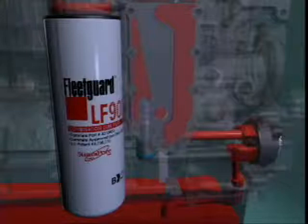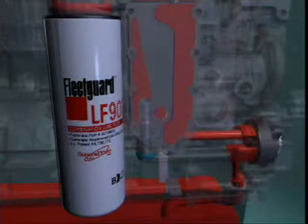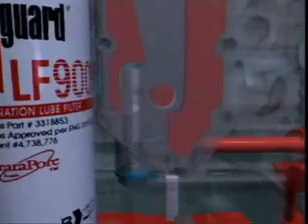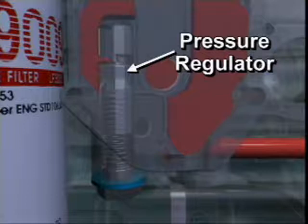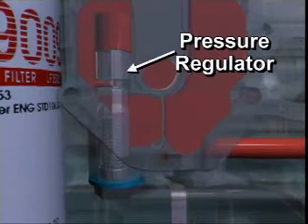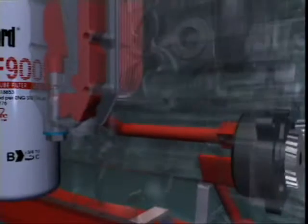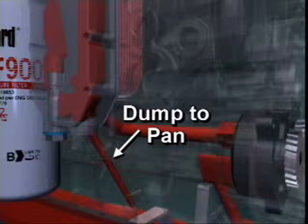On all ISL engines, ISC CM850 engines, and ISC CM554 engines modified as previously discussed, the pressure regulator directs the flow of excess oil from the oil regulator to the oil pan rather than to the inlet side of the pump. This allows the pump to bypass enough oil to regulate the oil pressure to the desired range without too much restriction to the flow of oil.